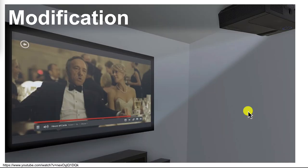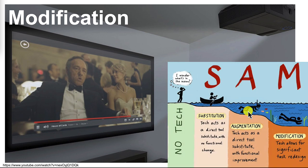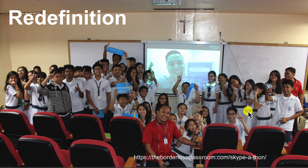Next is modification. With the overhead projector you're limited to static images, but now with the digital projector you can put up videos — instructional videos, YouTube, Teacher Tube, things like that. This is something that wasn't really possible with the overhead projector; it was not possible. You could do it in other ways, but the digital projector is much more convenient. So that's modification.